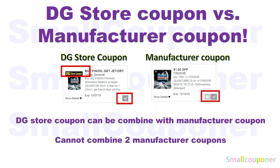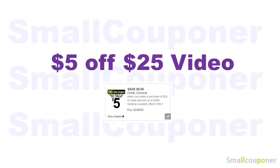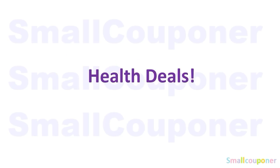At Dollar General, you can combine a store coupon with a manufacturer coupon for one item. But you cannot combine two manufacturer coupons, whether in the form of a digital coupon, a paper insert coupon, or a printable coupon for one item. I will be making a 5 out of 25 scenarios video for this upcoming Saturday, February 8th, 2020. So let's get started with all of the deals.